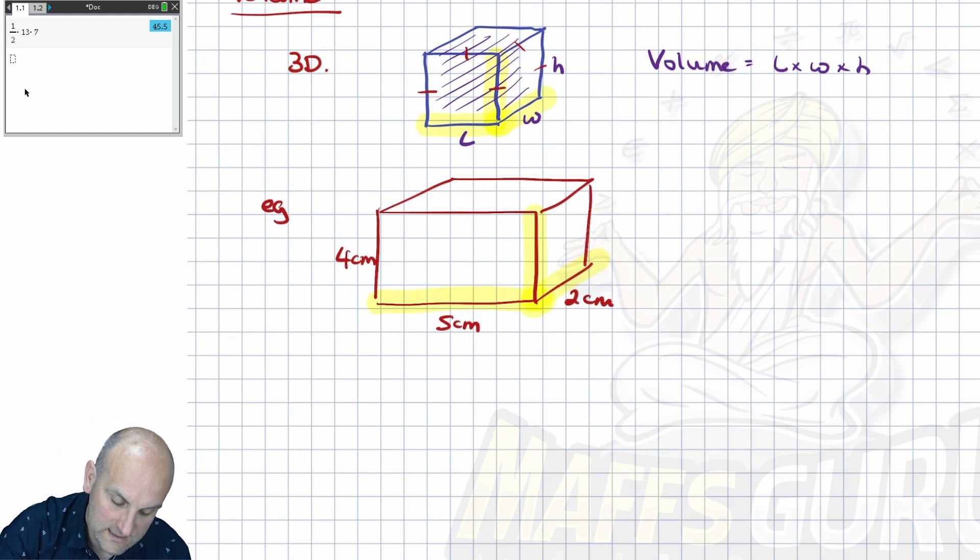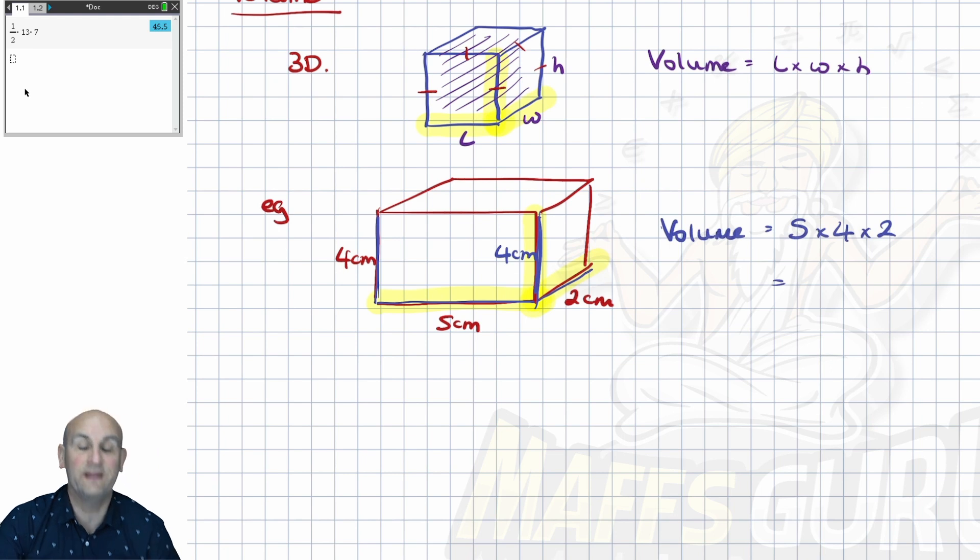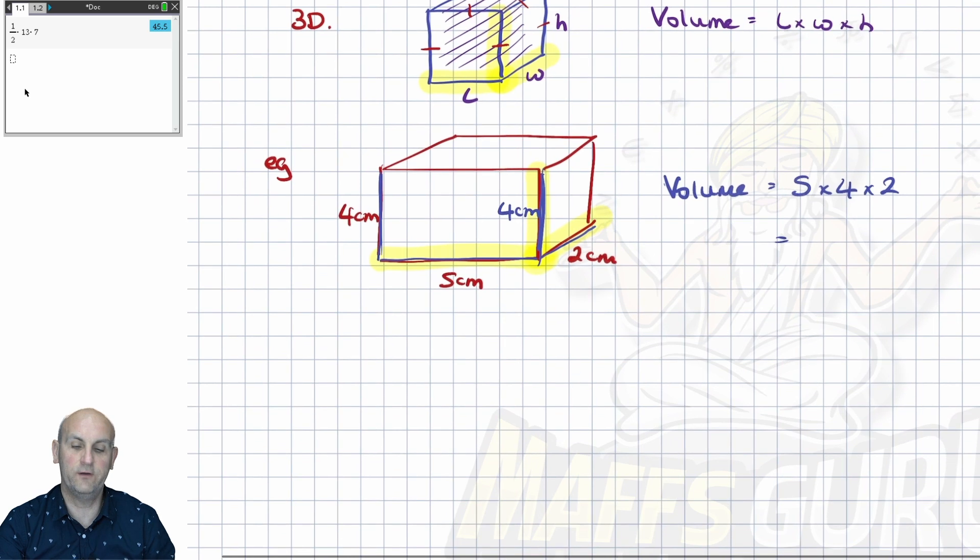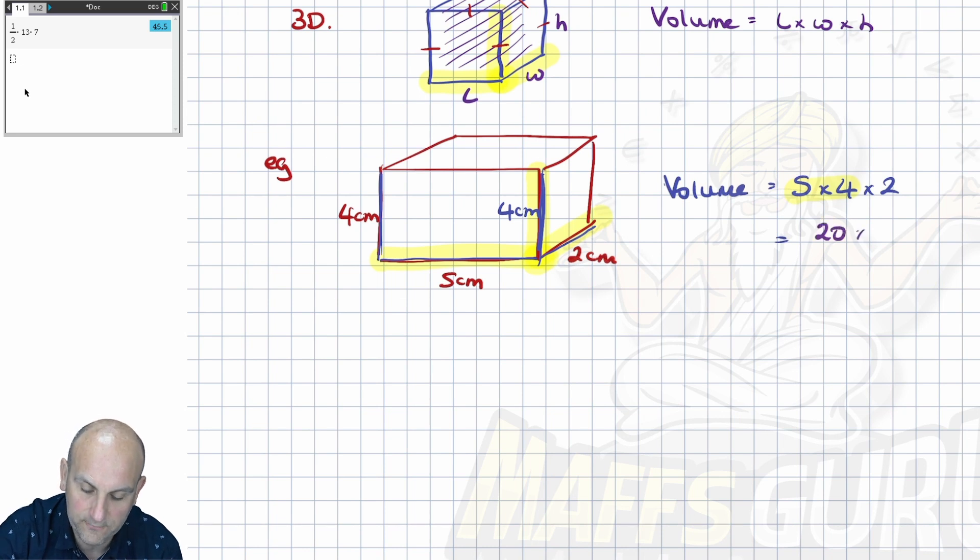If I want to find the volume, there is my corner. And I'm going to do that times that times that. That is my volume. I know that this length here is five. I know that length there is two. And this length here is four centimeters. So, in which case now, my volume is equal to five times four times two. Five times four is 20 times by two, and 20 times two is 40.